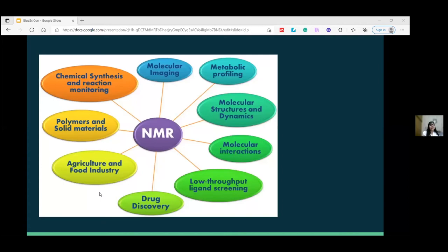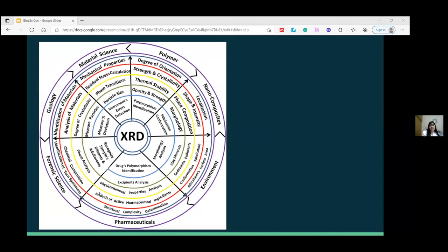Both NMR and X-ray crystallography offer unique applications. Here we can see the unique applications of NMR like metabolic profiling, molecular structures and dynamics, molecular interactions, drug discovery, and so on. When combined with X-ray crystallography, they can be used almost anywhere. In this figure you can see the applications of X-ray diffractometer in pharmaceuticals, environment, nanocomposites, geology, and so on. Their combination will not only improve the life detection technologies but also improve life on Earth as well as in space.